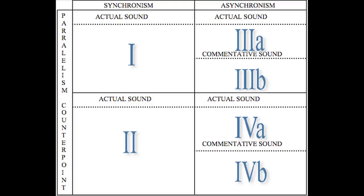Here, just seeing it on a piece of paper helped it all. Kind of, but what do all the numbers stand for? Well, according to Crack Hours, there are six different types of sound, and they're broken down into three sections: synchronous and asynchronous, actual sound and commentative sound, and parallel and counterpoint. So, what do each of them do?